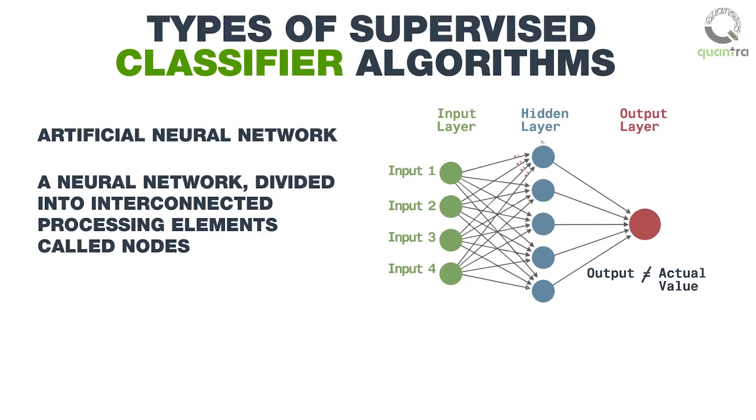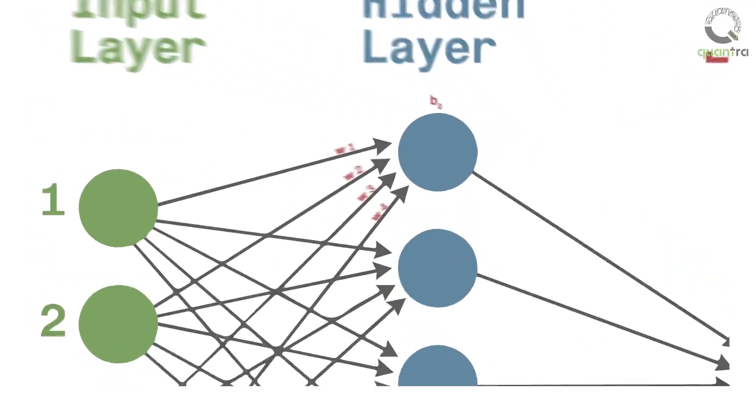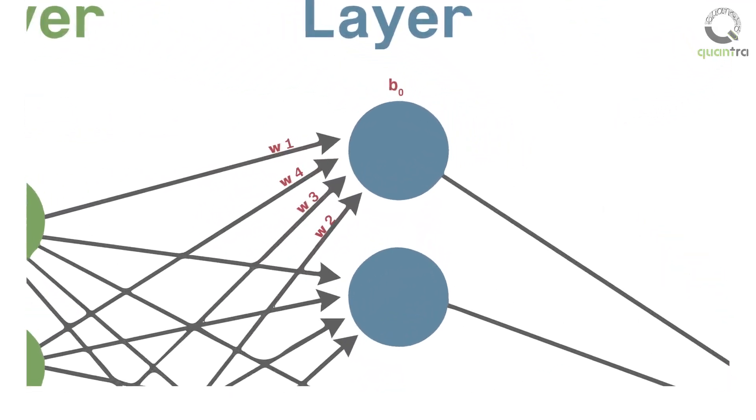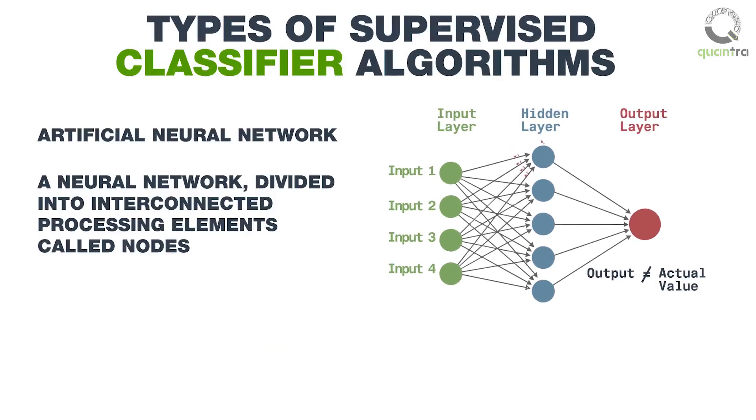Otherwise, back propagation is used. This includes adjusting the connection weights based on the error. The set of input samples are presented to the network repeatedly, until the error is minimized and the network is optimized.